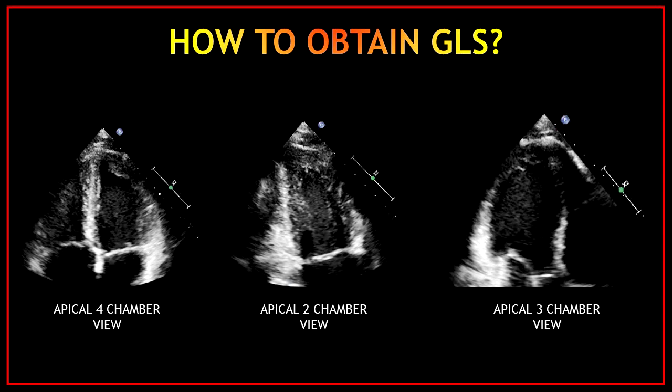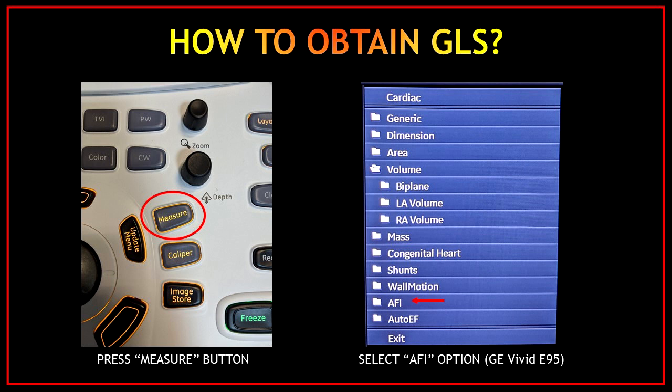So let's start with the main purpose of this video — teaching you how to obtain global longitudinal strain. First and most basic, you will need three views: a good quality apical four-chamber view, a good quality apical two-chamber view, and a good quality apical three-chamber view. Make sure to acquire all three views and that all segments are included. Just make sure to zoom in on the left ventricle. The process is very similar on every echo machine; however, for this video I'm going to be using the GE Vivid E95.